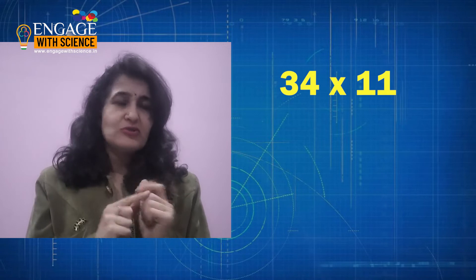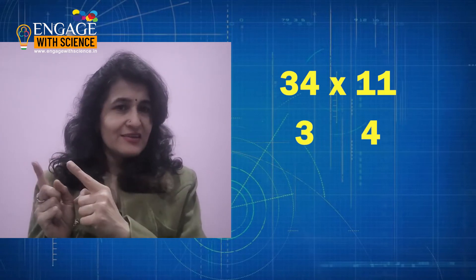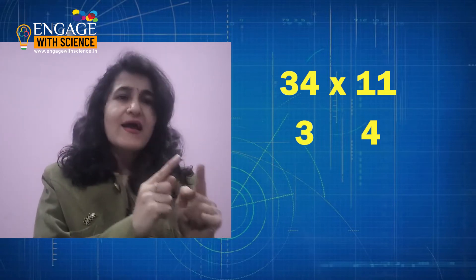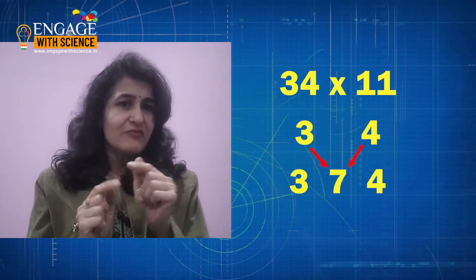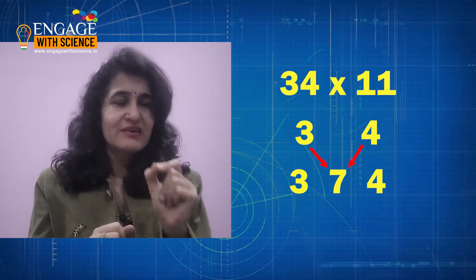Move to another example, 34 into 11. So you will write 3, 4, add 3 plus 4, it is 7. So insert between 3 and 4, so the answer is 374.